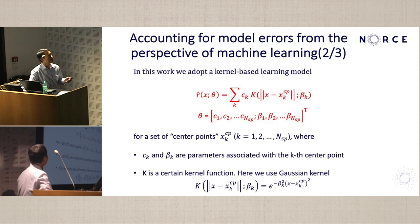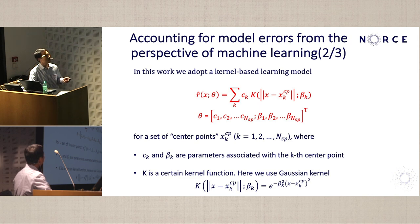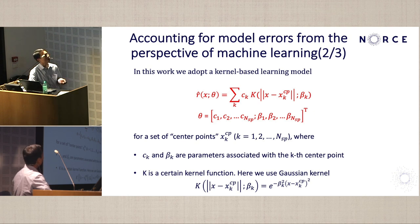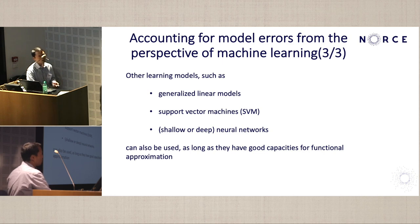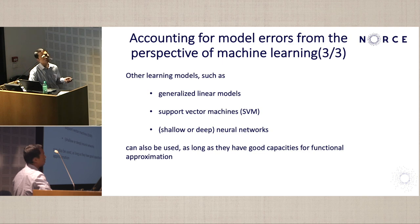Our basic idea is to approximate this residue functional by a parametric machine learning model. In this work, we adopt a kernel-based machine learning model, approximating the residue functional as the sum of a set of kernel functions. For each kernel function k, there is an associated weight coefficient c_k and an intrinsic parameter beta_k. For example, if we use a Gaussian kernel, beta_k corresponds to the inverse of the standard deviation. We could also use other models such as generalized linear models, support vector machines, or shallow or deep neural networks.